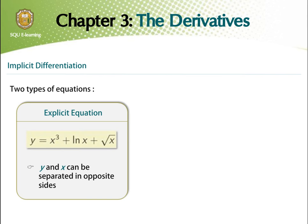Well, we have two types of equations. We could write them as explicit equations. That means we could separate the y in one side, and a whole other expression that's involving x only in the other side, like in the first line. This is what we call it, explicit equation.